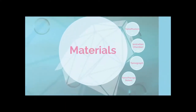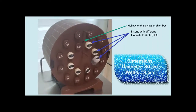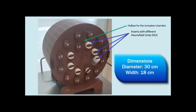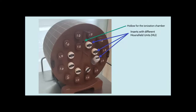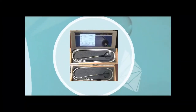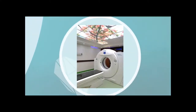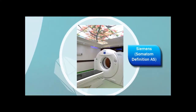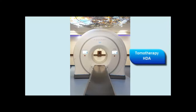Materials: the tomophantom, which is basically our patient where the ionization chamber is located, and it consists of various inserts for different HU, or Hounsfield units. We are going to use an ionization chamber, A1SL, with its respective electrometer. We have a tomograph simulator, and finally, our tomotherapy equipment.